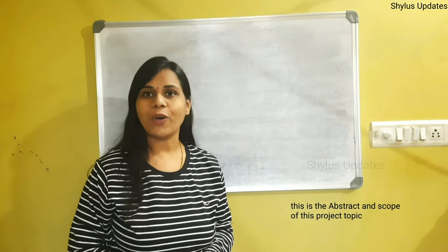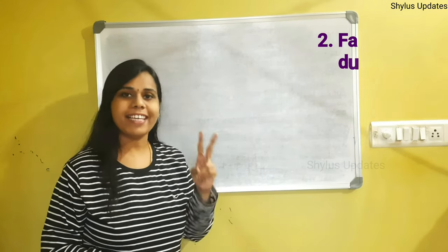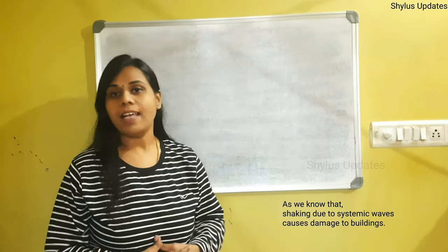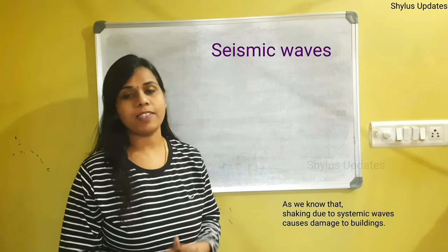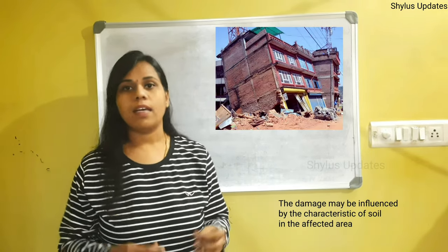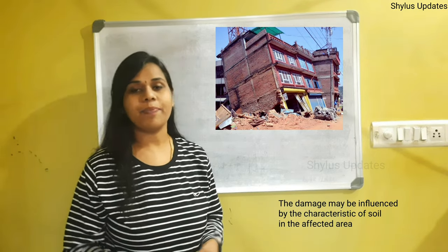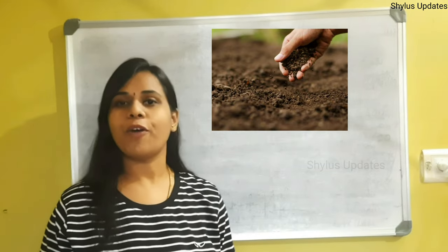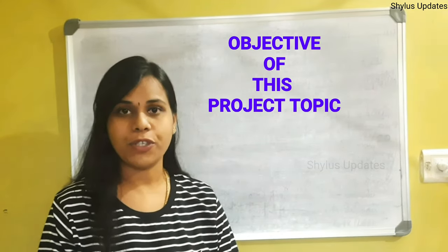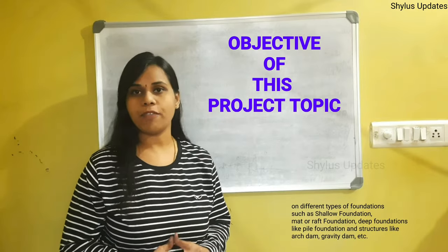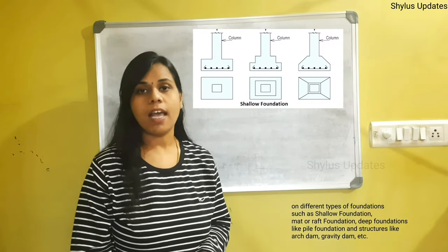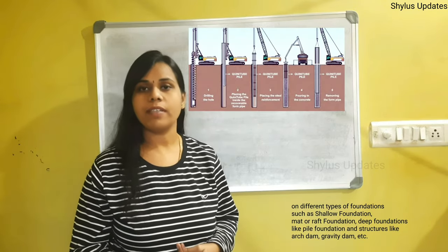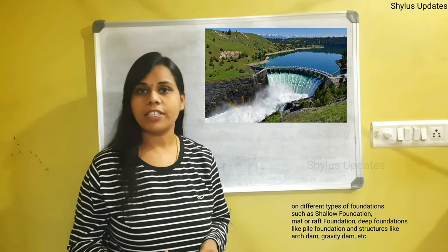The second topic is failure of foundation due to earthquake. As we know, shaking due to seismic waves causes damages to buildings. These damages may be influenced by the characteristics of soil in the affected area. The objective of this project topic is to show the effect of earthquake on different types of foundations, such as shallow foundation and mat or raft foundation.